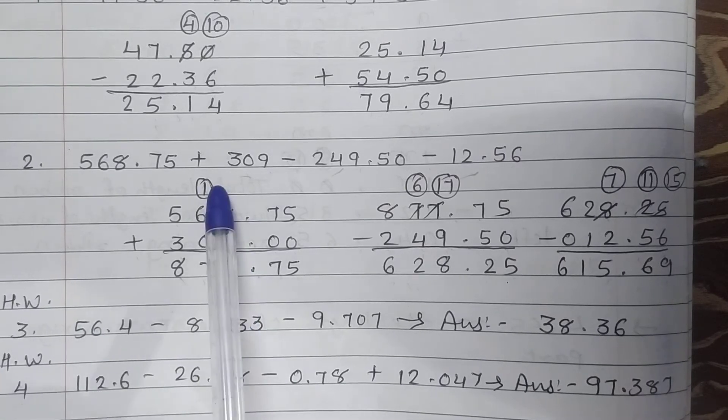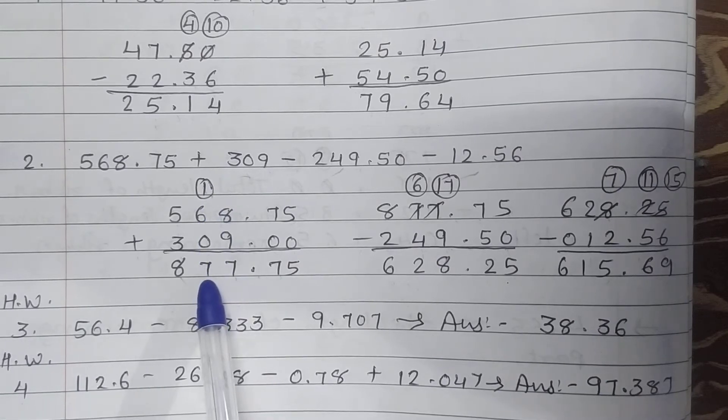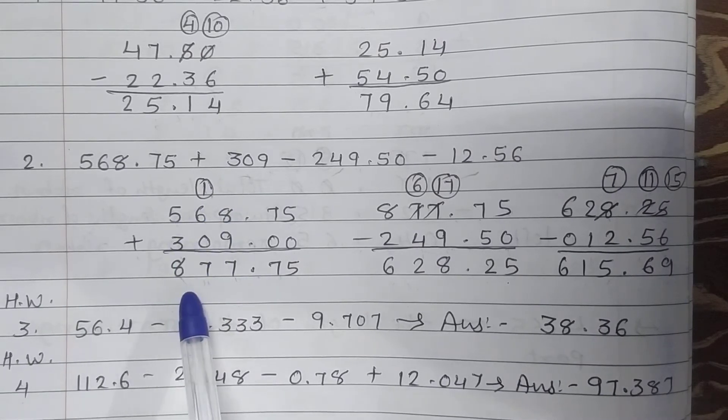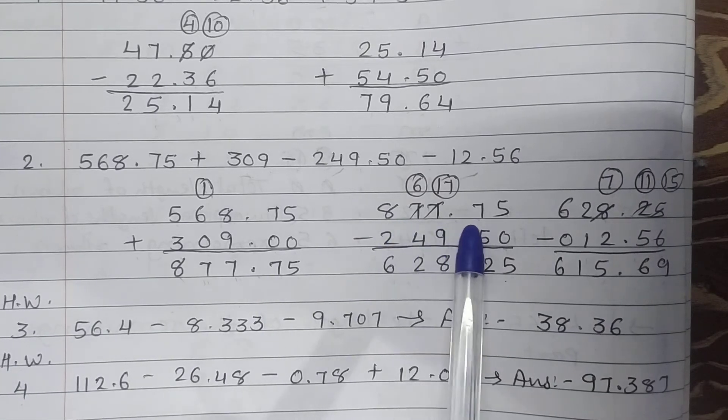8 plus 9 is 17, 7 down and 1 carry. 6 plus 1 is 7, 7 plus 0 is 7. 5 plus 3 is 8. Now write down here 877.75.